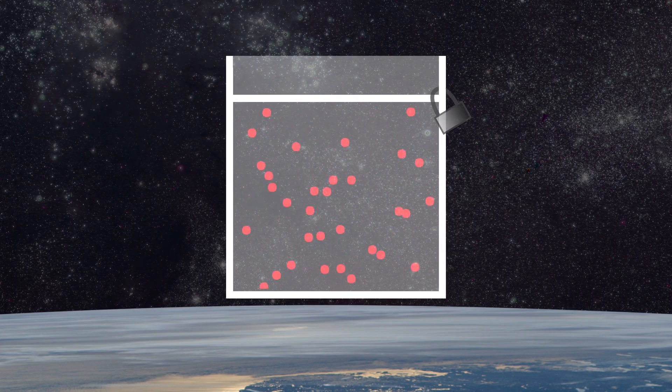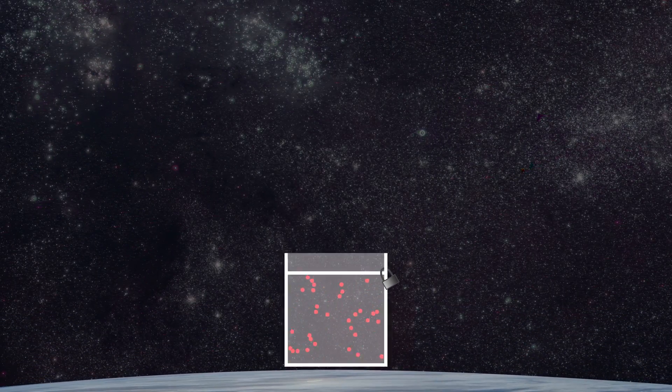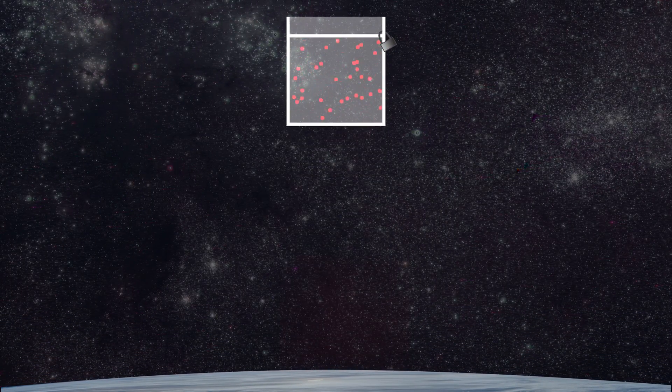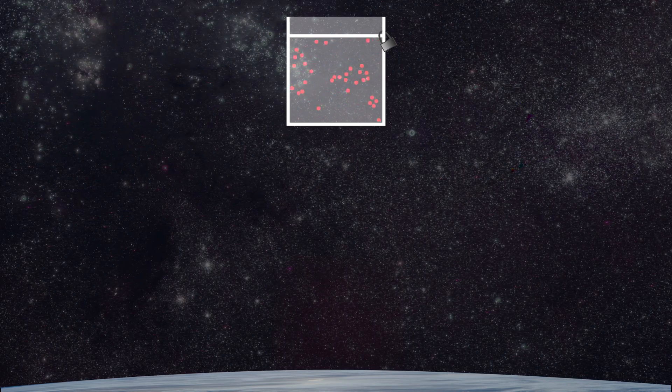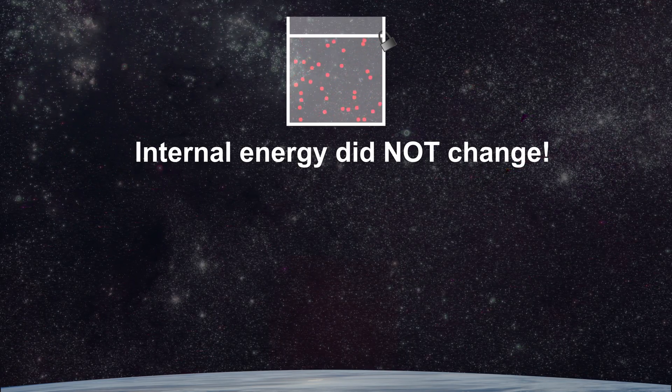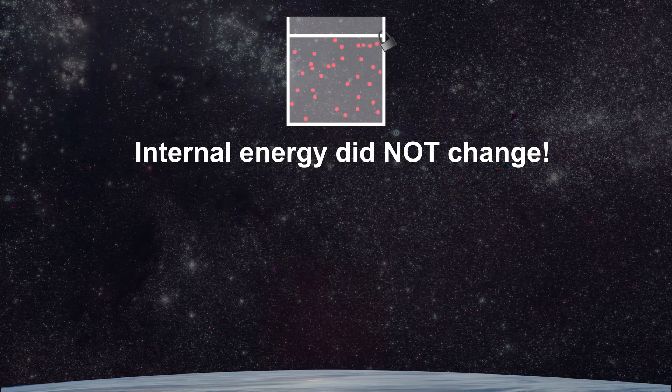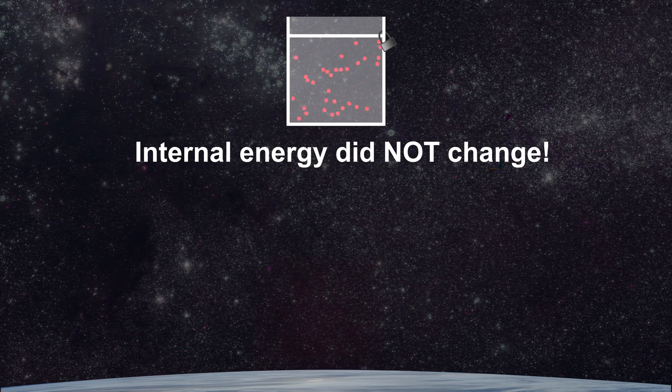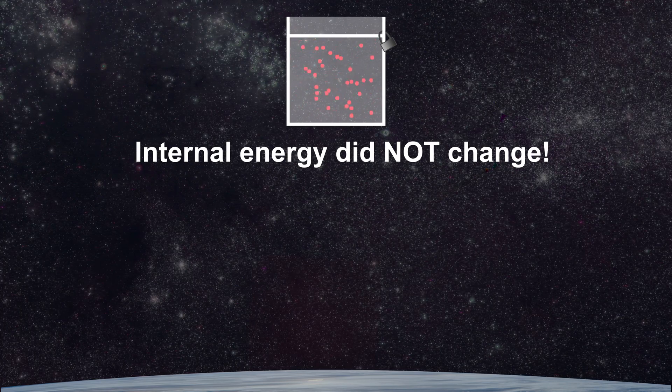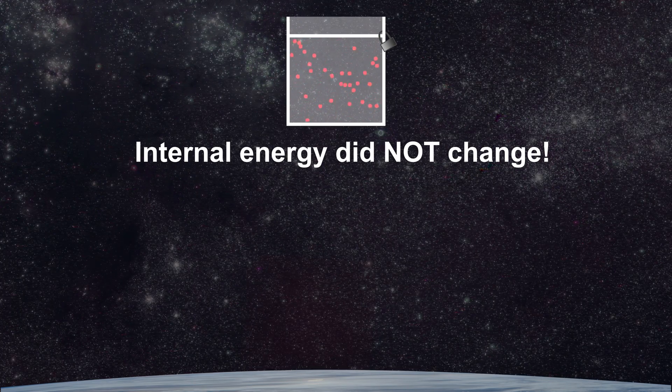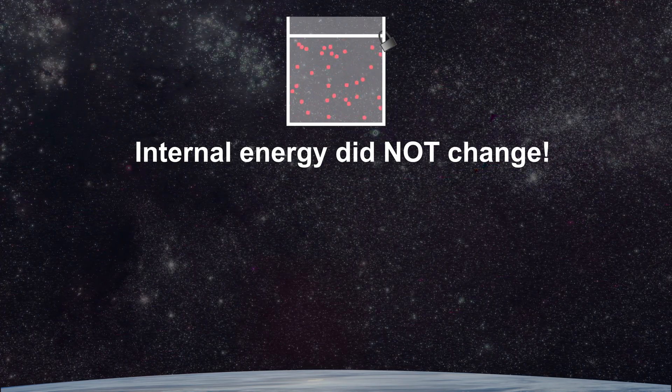Imagine locking our piston into place such that no work can be done on the gas and raising the cavity far above the earth. In this scenario the internal energy of the gas will not change. The system did not exchange heat and the piston did not do work on the system. Therefore the temperature of the gas inside the cavity does not change simply because we elevated the cavity.